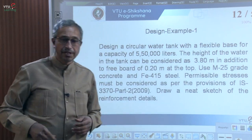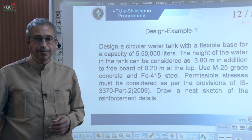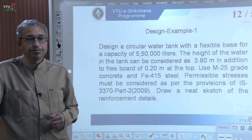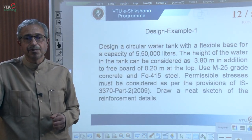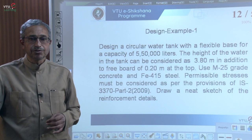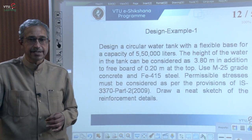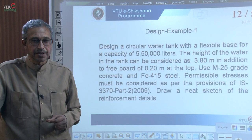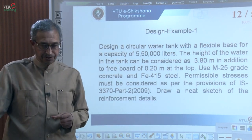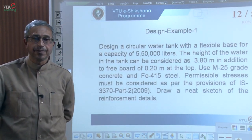Now let us go to the design example. Design a circular water tank with a flexible base for a capacity of 5,50,000 liters. The height of water in the tank is restricted to 3.8 meters, with a freeboard of 0.2 meters at the top. Materials used are M25 grade concrete and Fe415 steel. Permissible stresses must be as per IS 3370 Part 2, 2009 version. A neat sketch of the reinforcement details is also required.